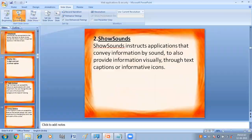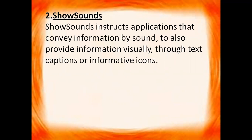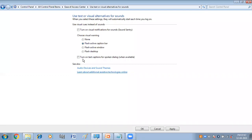Next we have Show Sounds. Show Sounds instructs applications that convey information by sound to also provide information visually through text captions or informative icons. To activate this, go to the Control Panel. Here you have the option 'Turn on text captions for spoken dialogue,' so whatever is spoken, you will get the text. Select this and then click Apply and then OK.